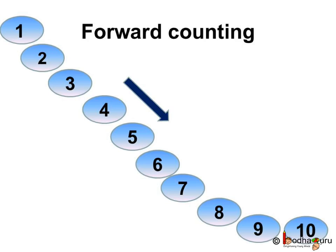So, when we count from 1 to 10, we go in forward direction. 2 is one more than 1, 3 is one more than 2, and 4 is one more than 3. The next number is one more than the previous number. So, it is called forward counting. We go in the forward direction.